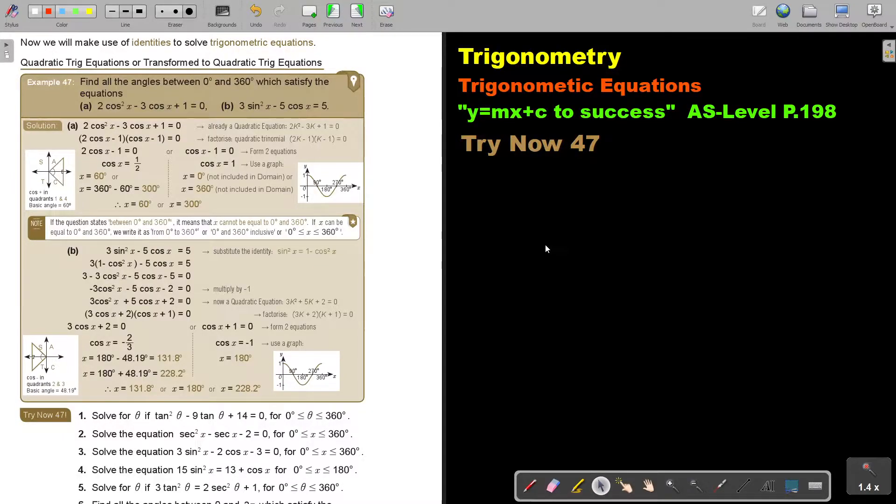In this video, we are going to continue with trigonometric equations. You will find this on page 198 in the Namibia AS level mathematics textbook Y equals MX plus C to success. Now, we will make use of identities to solve trigonometric equations. Let's look at the first example.